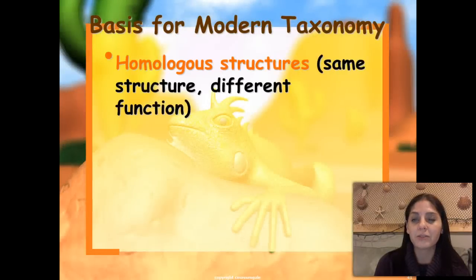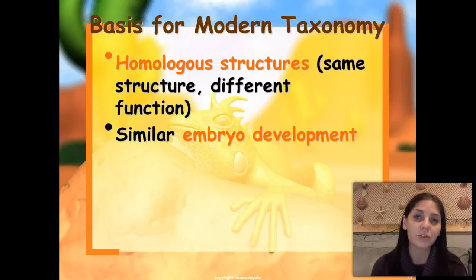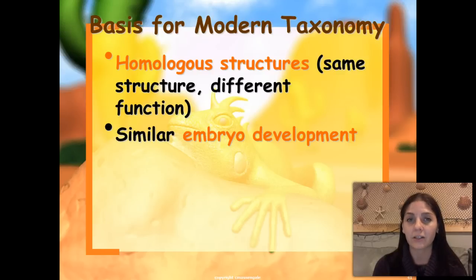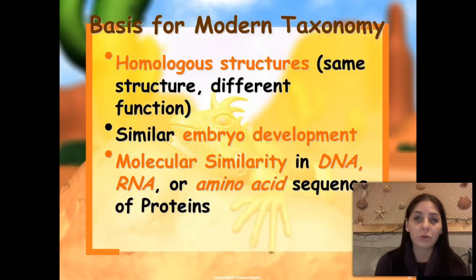The basis for modern taxonomy relies on several things. One is homologous structures — meaning structures that are the same in form but have different functions. Homologous structures share a common evolutionary ancestor; we may have adapted in different ways, but we share that common ancestor. We also consider similar embryological development and similar molecular biology in DNA, RNA, and amino acid sequences that compose our proteins.